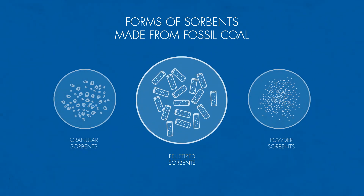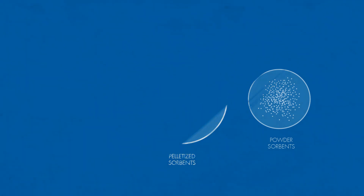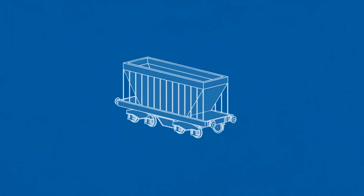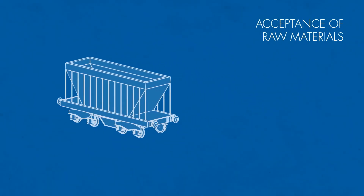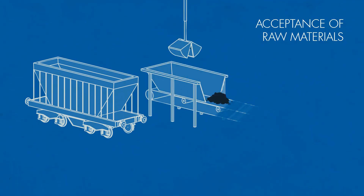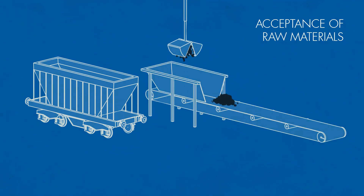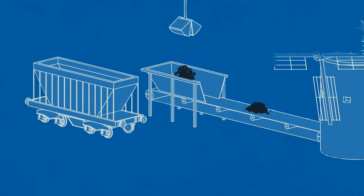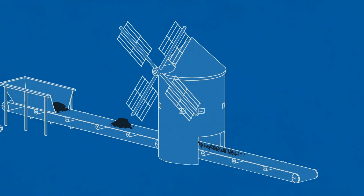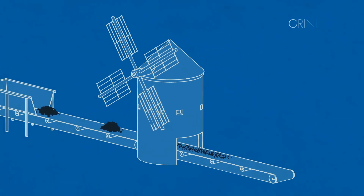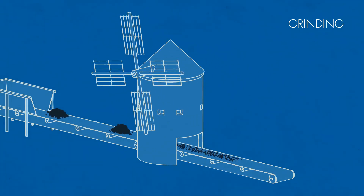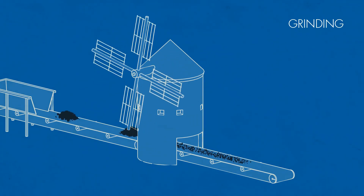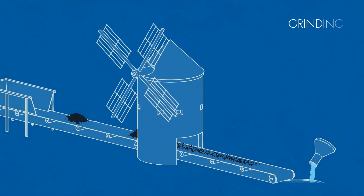The technological process of manufacturing pelletized activated carbon includes the following stages. After the acceptance and sorting of raw materials — coal and resins — specialists perform grinding of coal and prepare a binder consisting of several components.